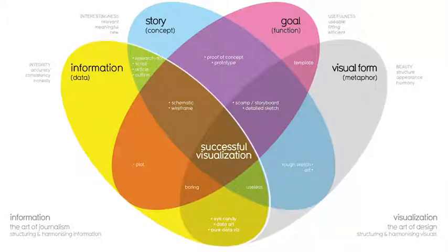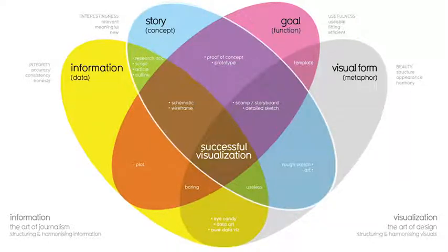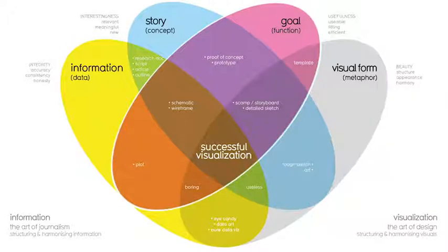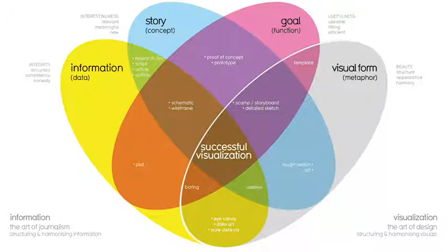You've learned a lot about the data used in visualizations — that's a key building block. The story or concept adds meaning to the data and makes it interesting. The story and the data combined provide an outline of what you're trying to show. The goal or function makes the data both useful and usable, and the visual form creates both beauty and structure. With just two elements, you can create a rough sketch of a visual, but won't get a complete visualization because you'd be missing other key elements.